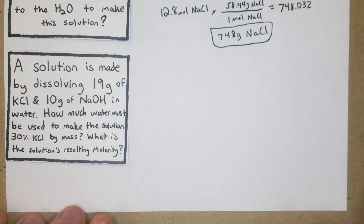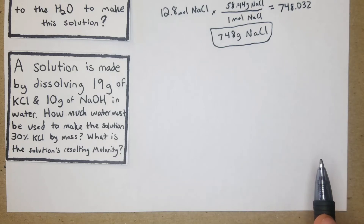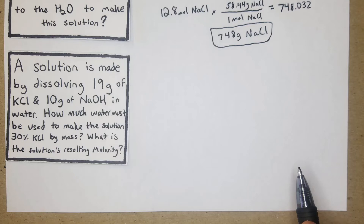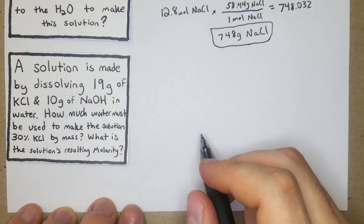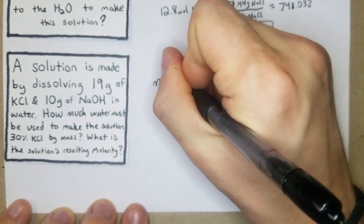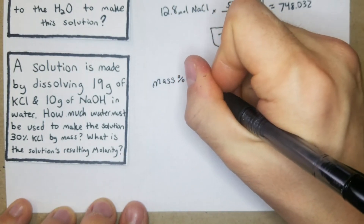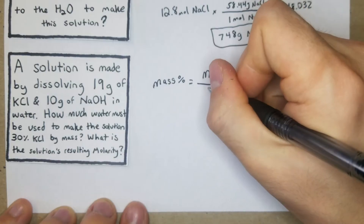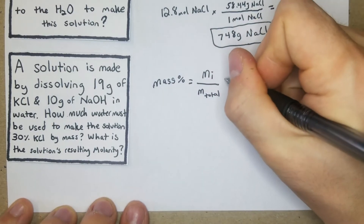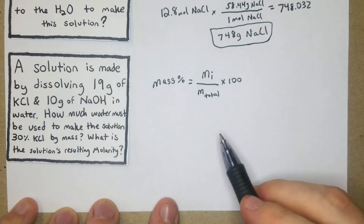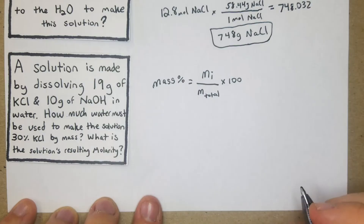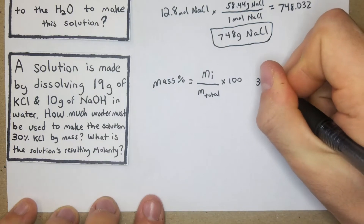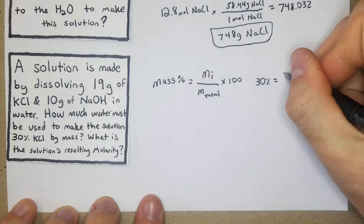Problem 3: a solution is made by dissolving 19 grams of KCl and 10 grams of NaOH in water. How much water is needed to make the solution 30% KCl by mass, and what is the resulting molarity? Mass percentage equals the individual mass over the total mass times 100 — the same way you'd calculate a test score percentage.